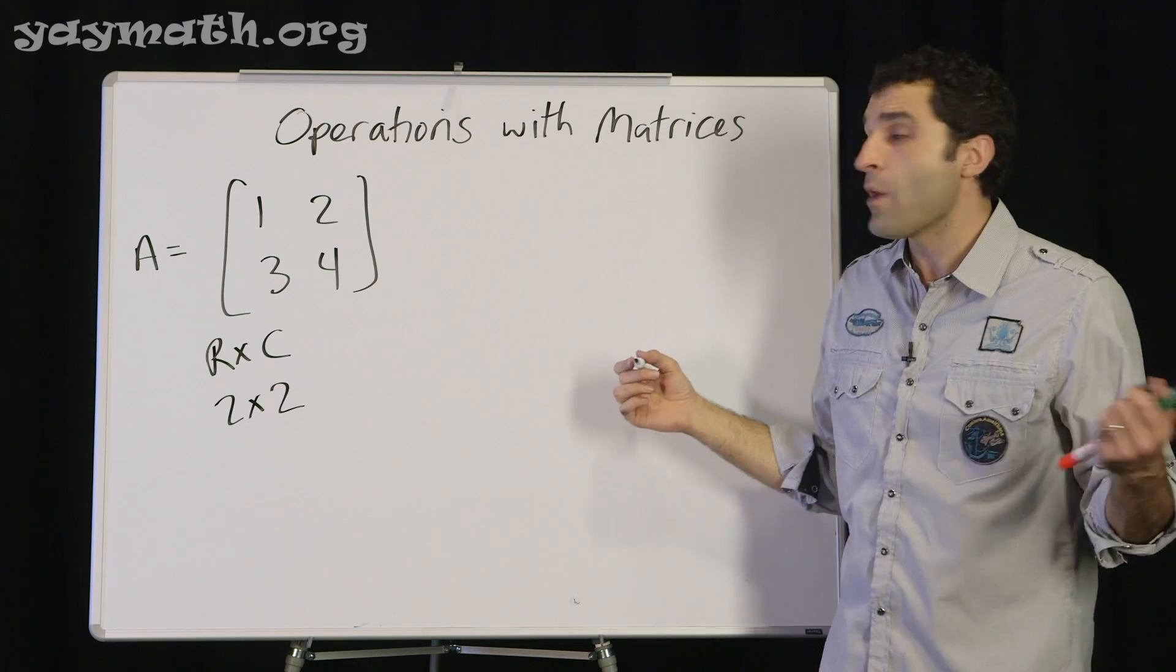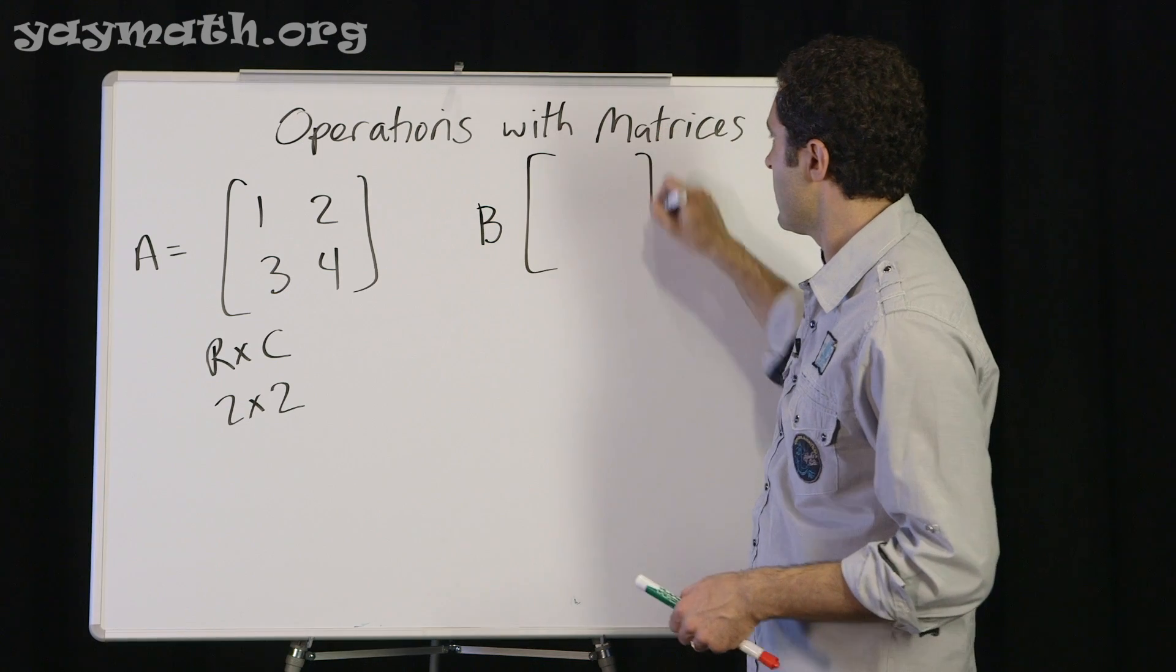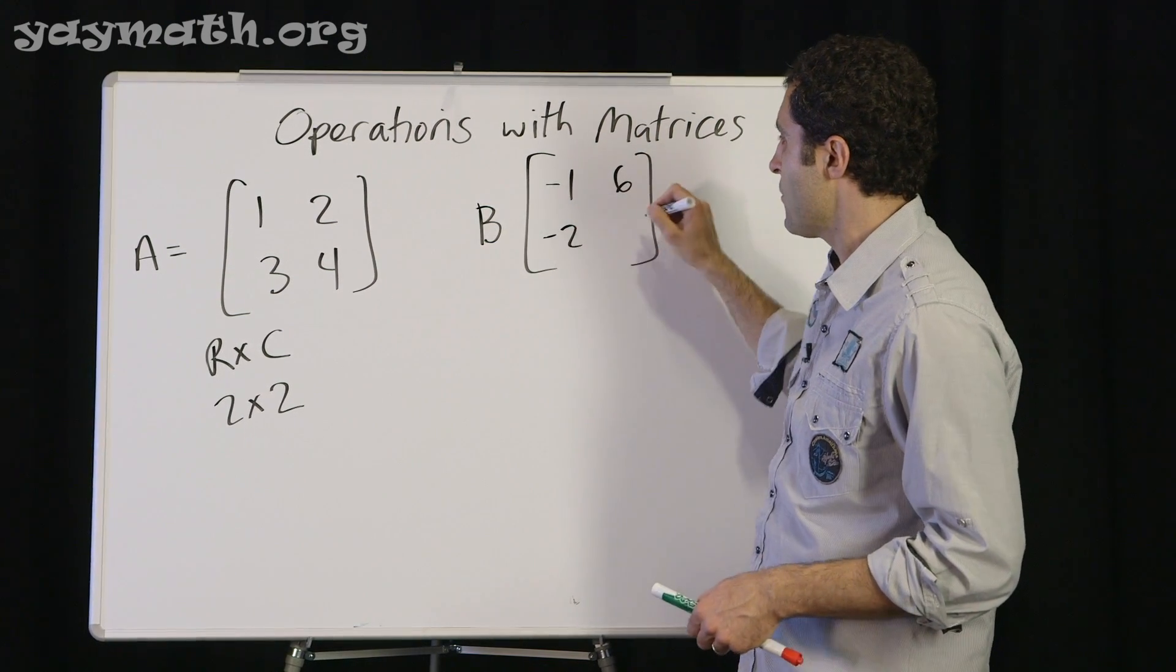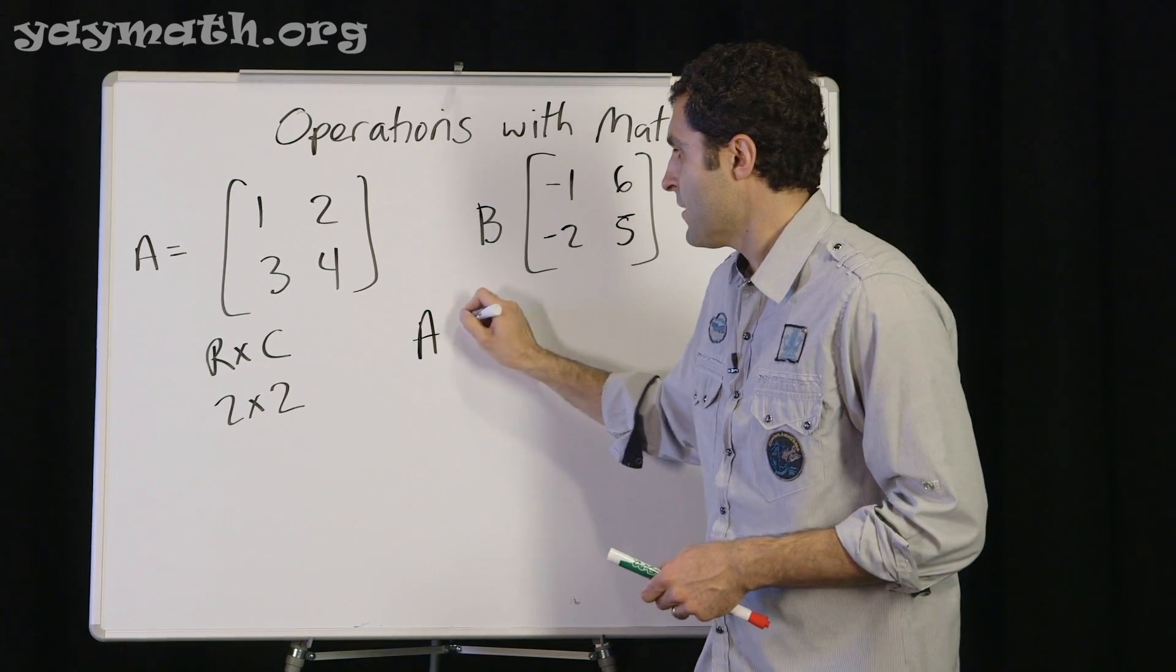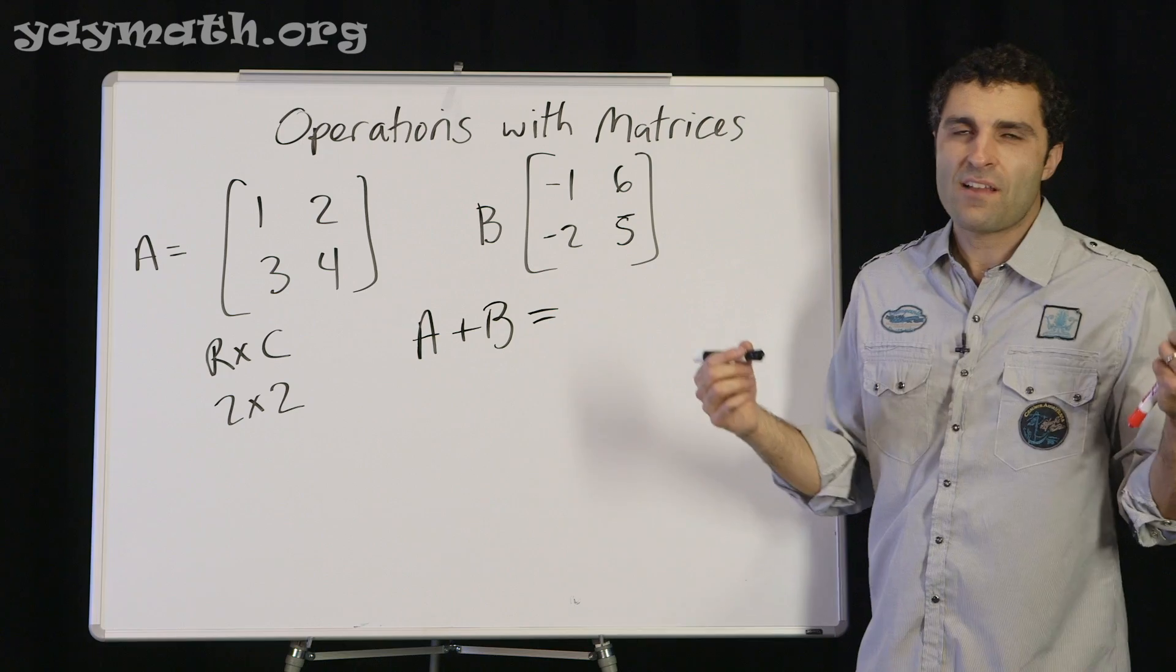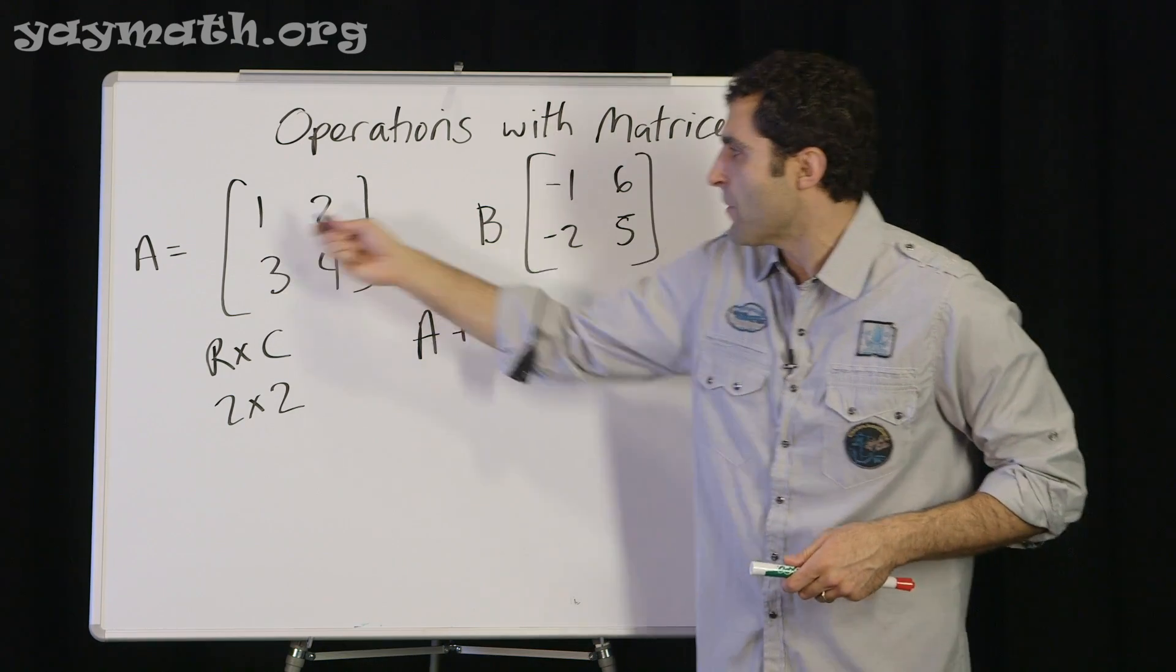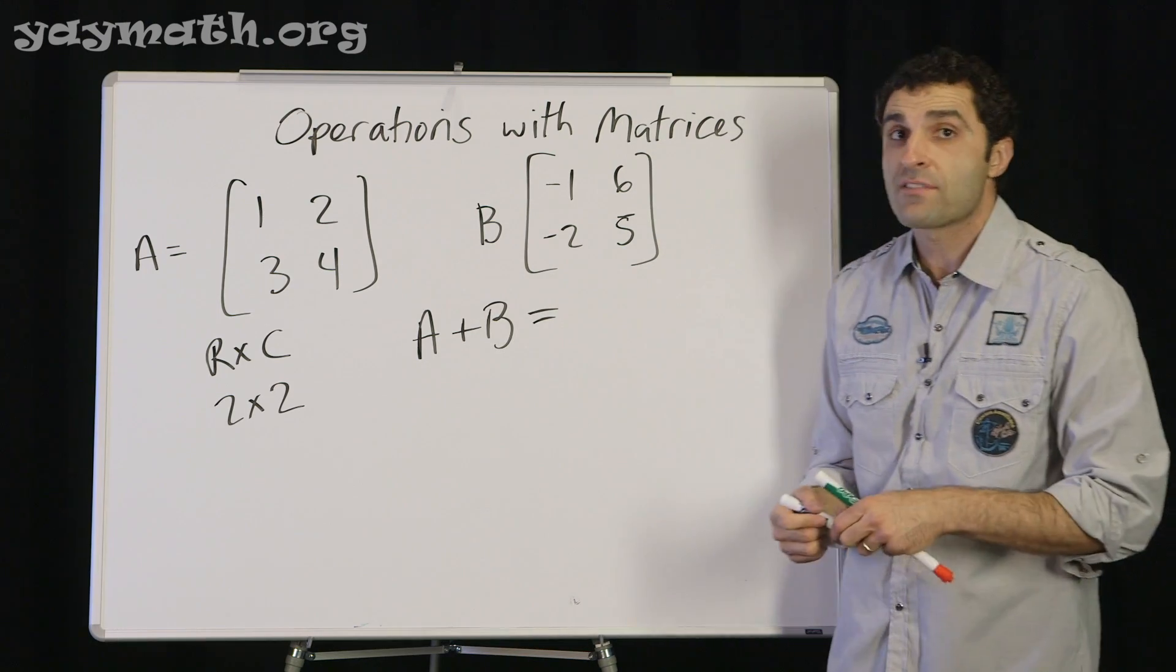And we're welcome to add that to a second matrix. Let's call it B. Let's go negative one, six, negative two, and five. So if we wanted to do A plus B, you probably guessed how this works. Trust your judgment. Trust your intuition that if you're going to add these two that every number in the appropriate slot would combine. And that would be the new value of that resultant matrix.